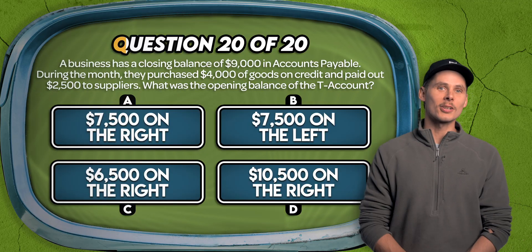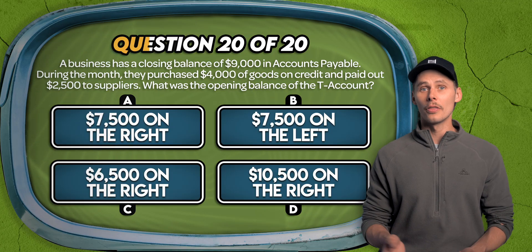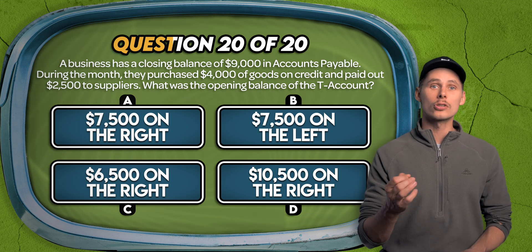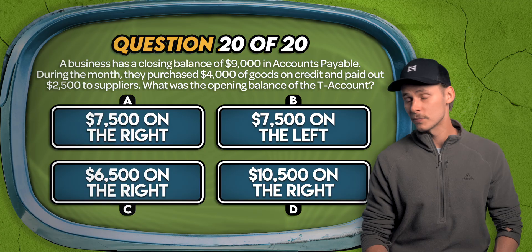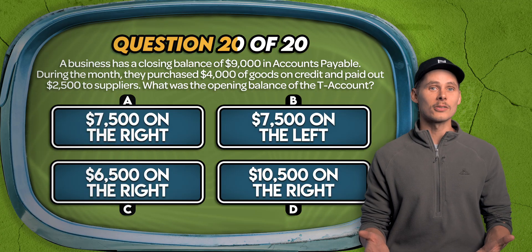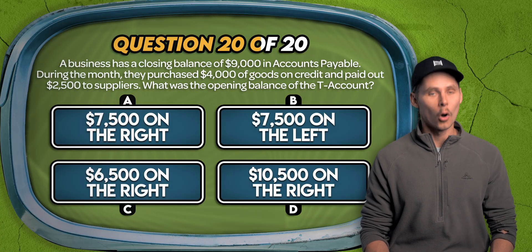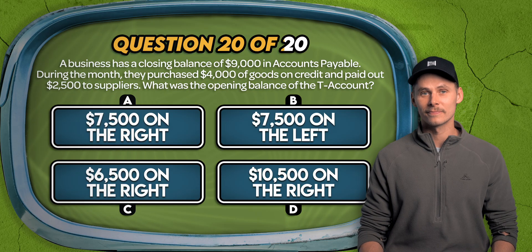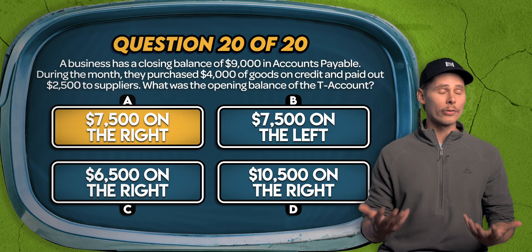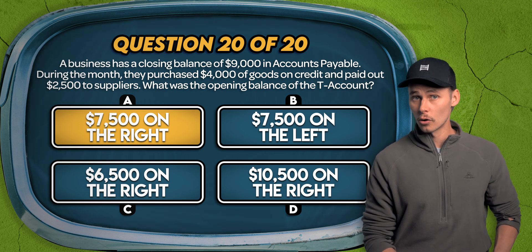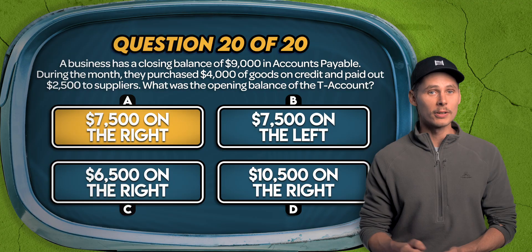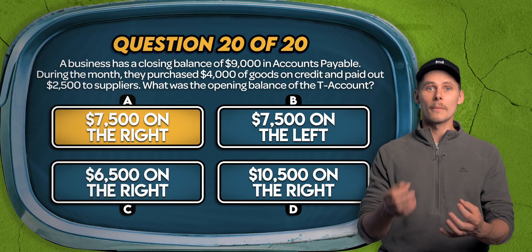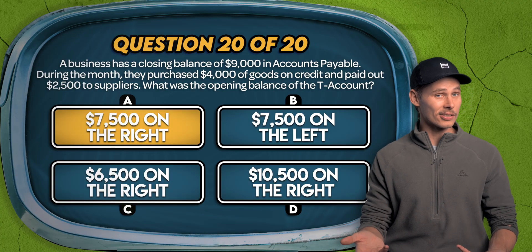Question 20. A business has a closing balance of $9,000 in accounts payable. During the month, they purchased $4,000 of goods on credit and paid out $2,500 to suppliers. What's the opening balance of the T-account? Is it $7,500 on the right, $7,500 on the left, $6,500 on the right, or $10,500 on the right? It's A. Accounts payable is a liability with a normal credit balance. The $4,000 purchase increases it; the $2,500 payment decreases it. To finish with a $9,000 closing balance, the opening balance must have been $7,500 on the right or the credit side.